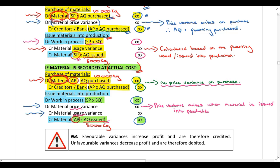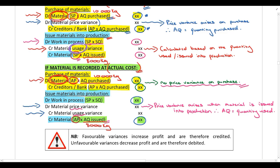So when material is recorded at actual cost, the price variance arises when the material is issued into production, not on the date of purchase — meaning the actual quantity used for the price variance is the quantity used or issued into production. Regardless of whether material is recorded at standard cost or actual cost, the usage variance always arises when material is issued into production, so the usage variance is always based on the quantity used or issued into production.